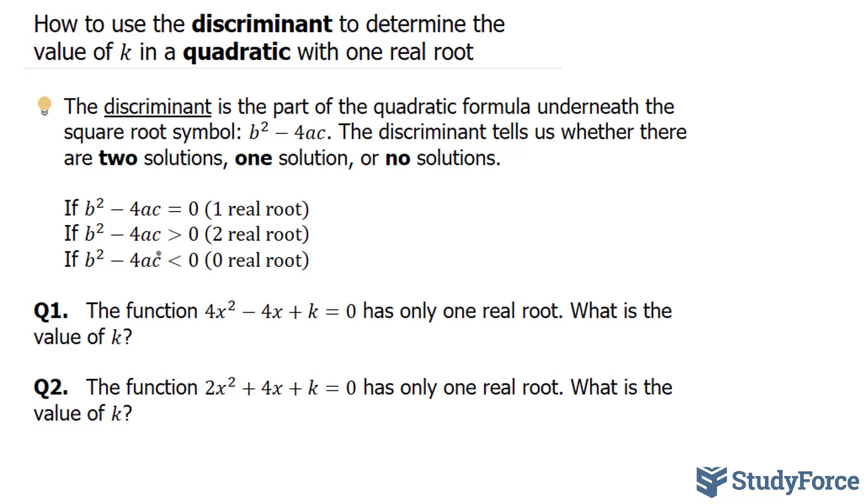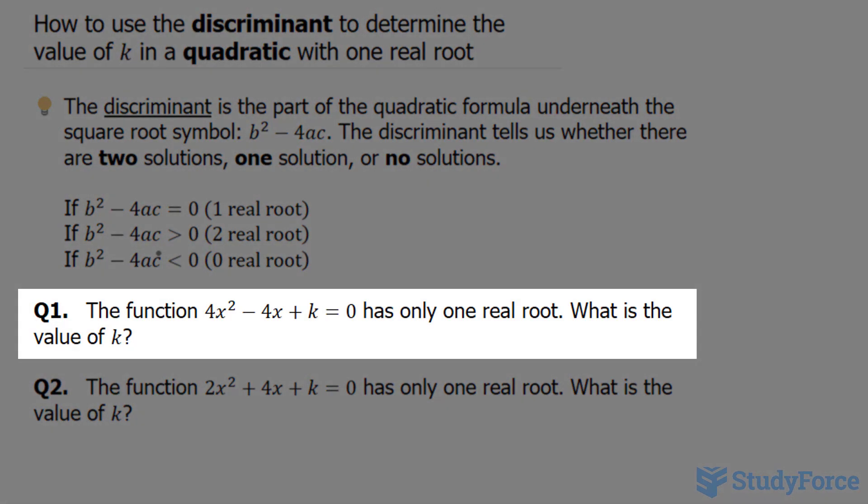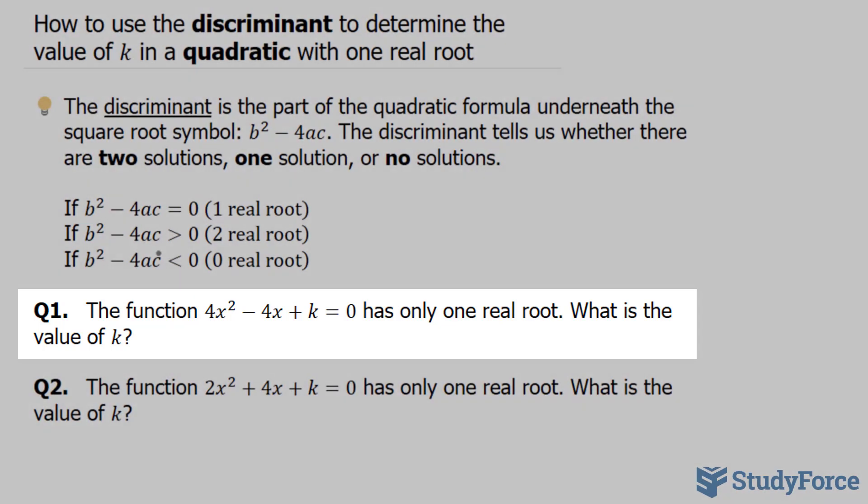The first question asks: the function 4x² - 4x + k = 0 has only one real root. What is the value of k?